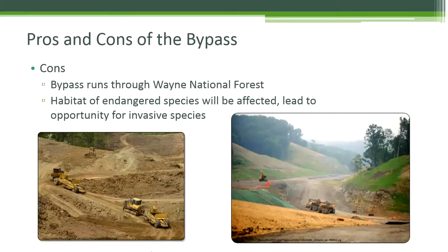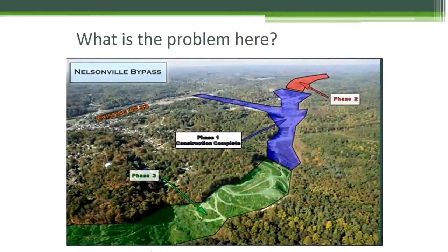The road construction also causes disturbance of the surrounding habitat, which creates opportunities for invasive species to move into the area. The Nelsonville bypass is made for easier, faster travel from Columbus to Athens, but there is another disadvantage to wildlife. Look at this picture and discuss what problem the bypass creates for the environment and species in the area.